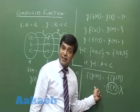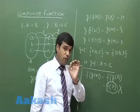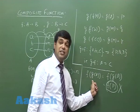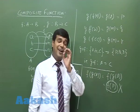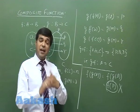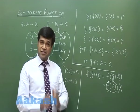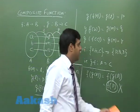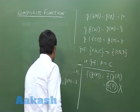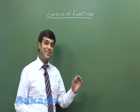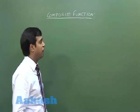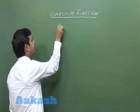g(f(x)) is clearly defined from A to C, but f(g(x)) could not be defined. Let's take another example through a Venn diagram and then we will try to define it in general form. Starting with another one to get a better idea of this composite function.